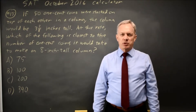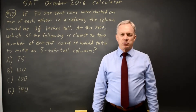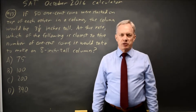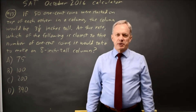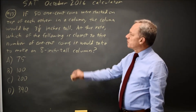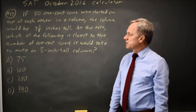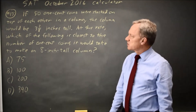College Board gives us a word problem describing a proportion — they use the word rate — and they ask us how many one-cent coins it would take to make a stack 8 inches tall, if 50 coins would make a stack 3 and 7 eighths inches tall.